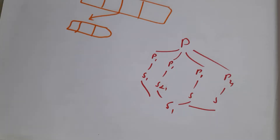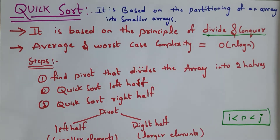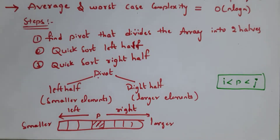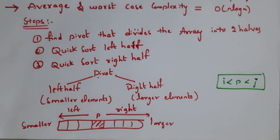Quicksort follows divide and conquer strategy. The average and worst case complexity of quicksort is O(n log n). The steps we need to follow in quicksort: first, we need to find a pivot element. This pivot element divides an array into two halves — one is the left half and one is the right half. Then we perform quicksort on the left half and quicksort on the right half.